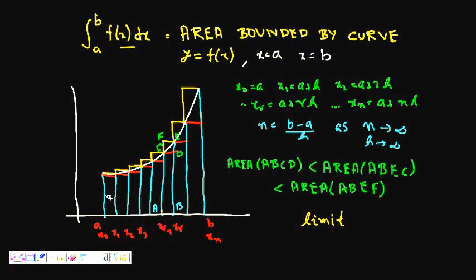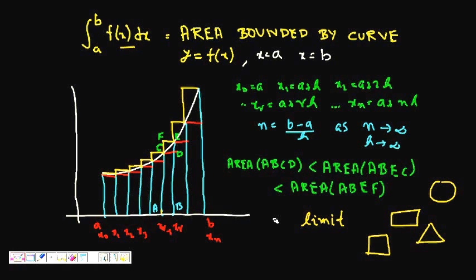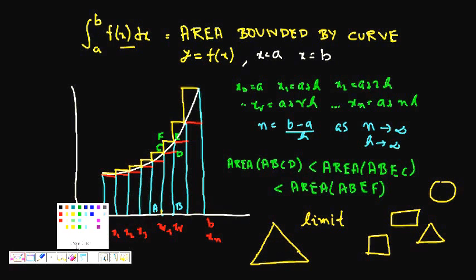Now if I ask you to find the area under a curve, it's very difficult. We know the area of a rectangle, square, triangle, and circle — but for any arbitrary curve, how do we find it? So let me make the question a little easier: can we approximate the area? I know the area of a rectangle, so can we use that to approximate the area under a curve?